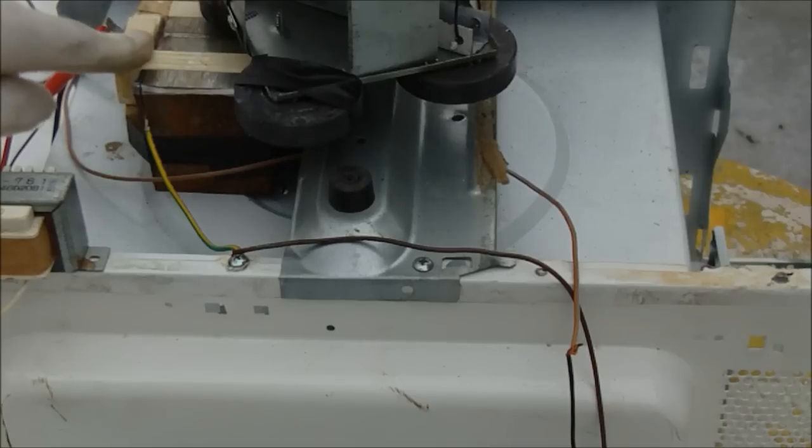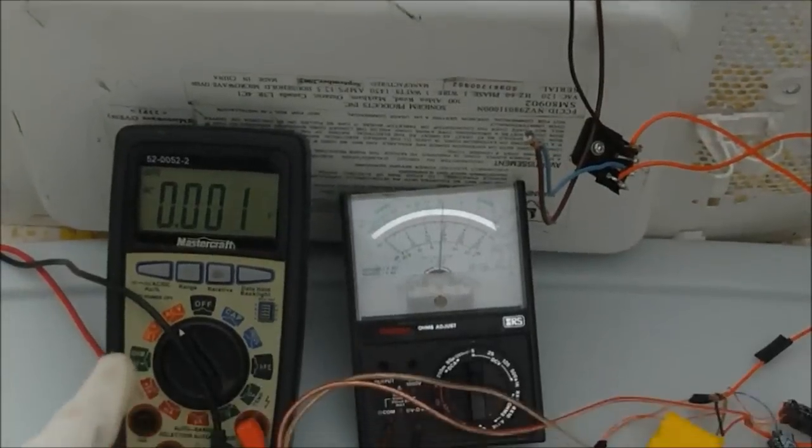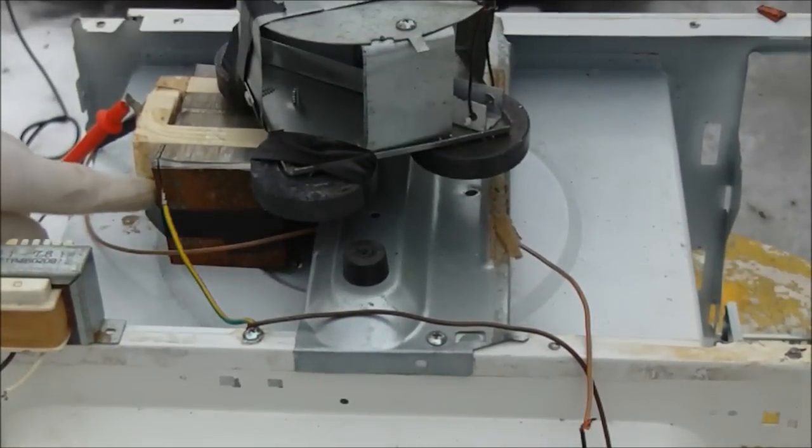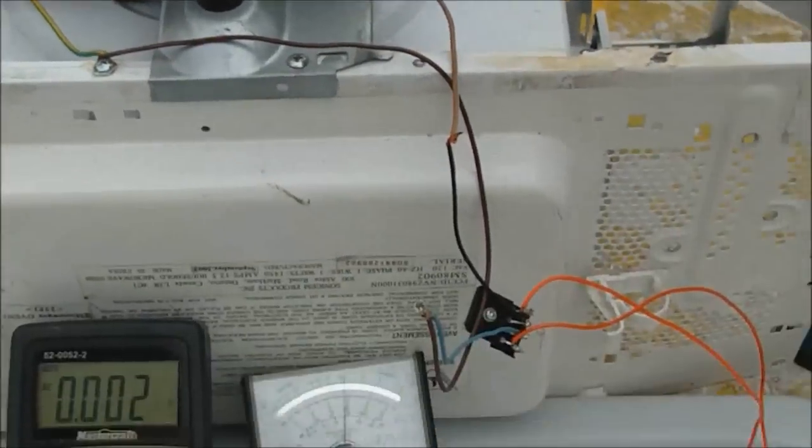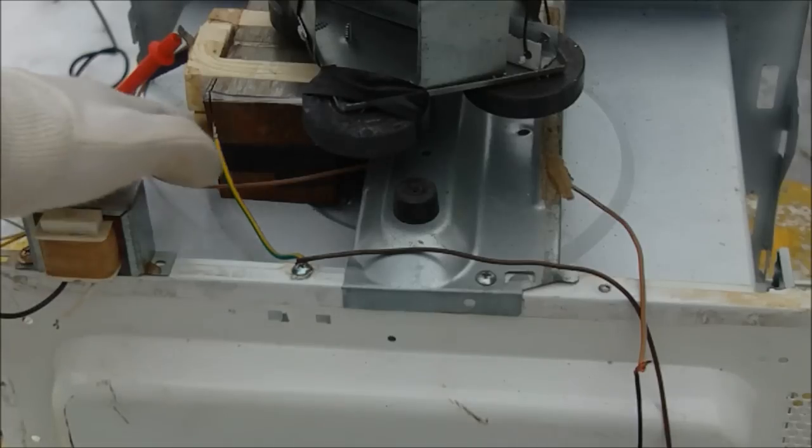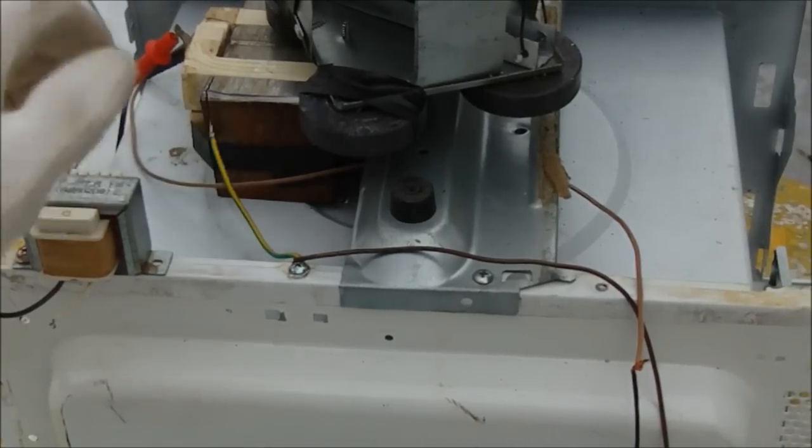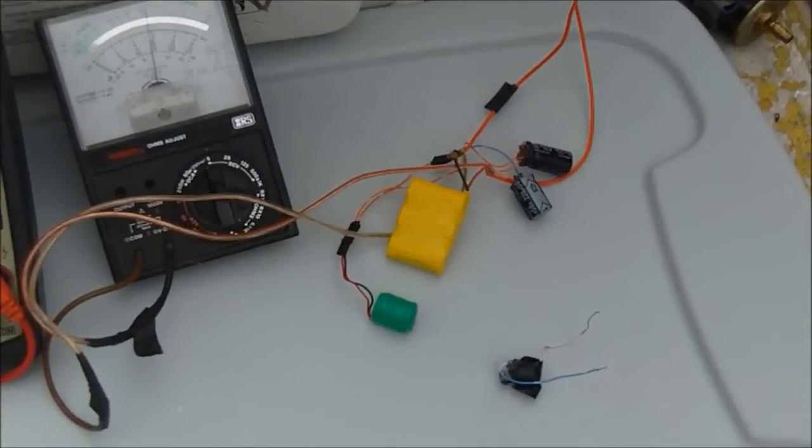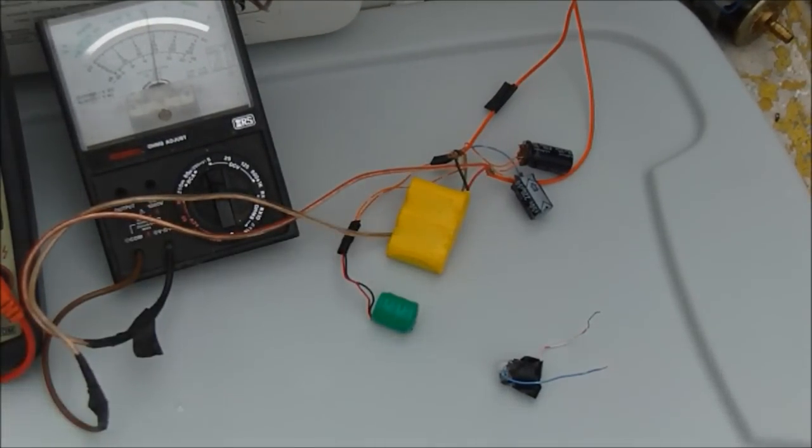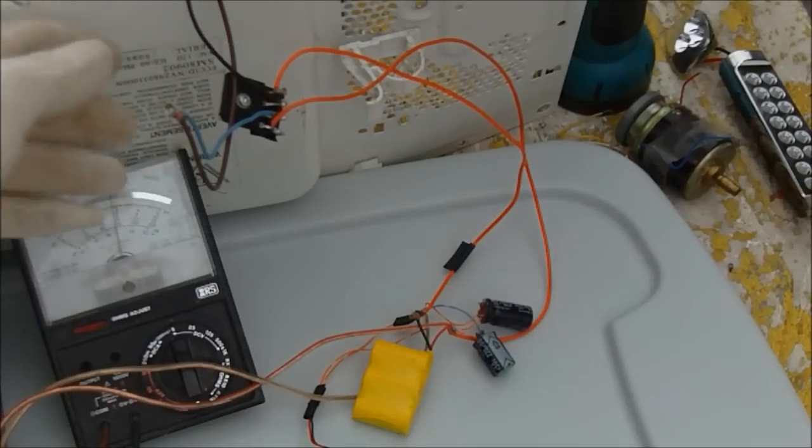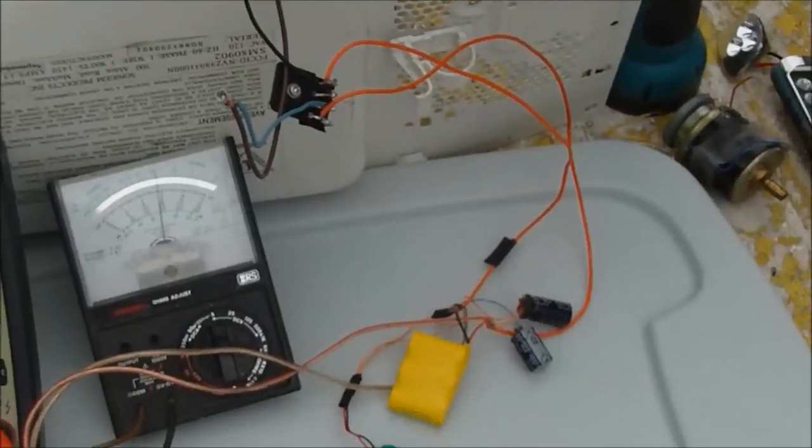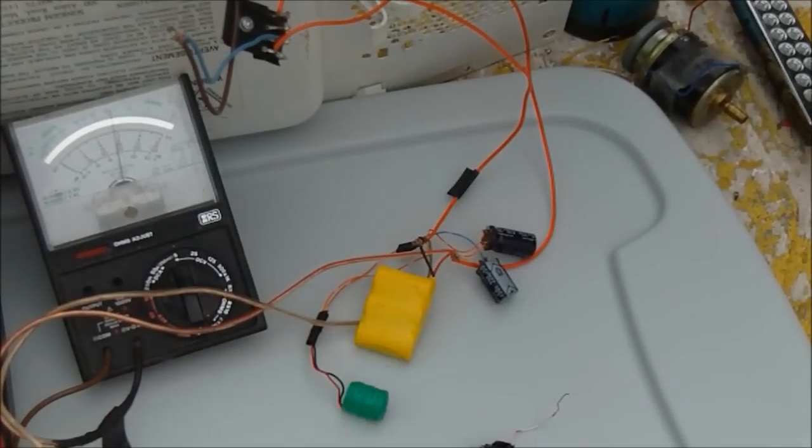I've hooked this coil on the top to this digital meter down here, and the coil on the bottom to this analog meter. The bottom coil on the transformer is hooked up to this rectifying diode here, and then to these batteries. You're going to need a rectifying diode to convert the AC current from the transformer to DC current to charge these little batteries.